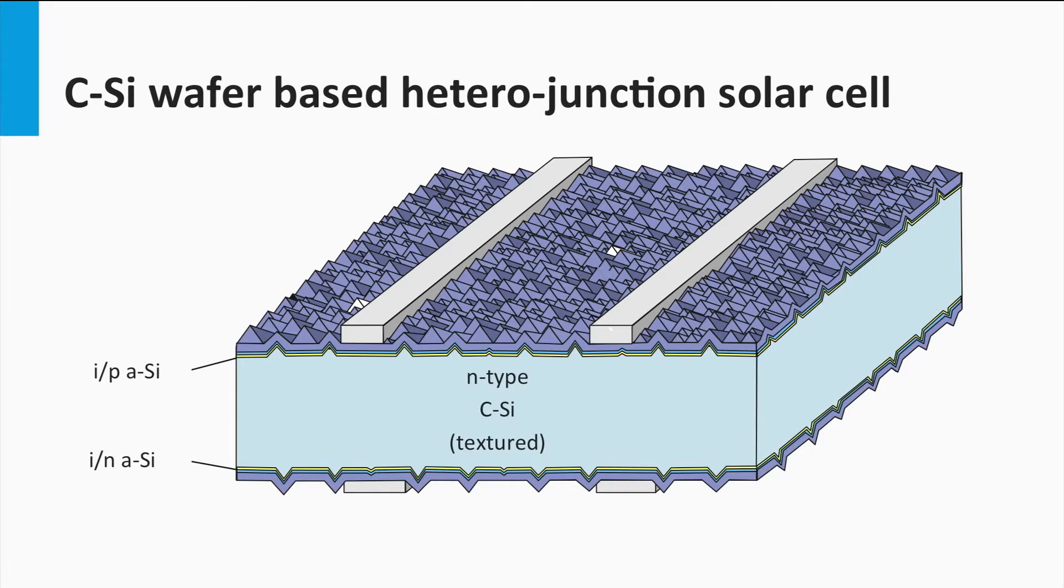Another important advantage of the HIT solar cell is that the amorphous silicon layers are deposited using cheap and straightforward plasma-enhanced chemical vapor deposition technology at low temperatures, not higher than 200 degrees Celsius.